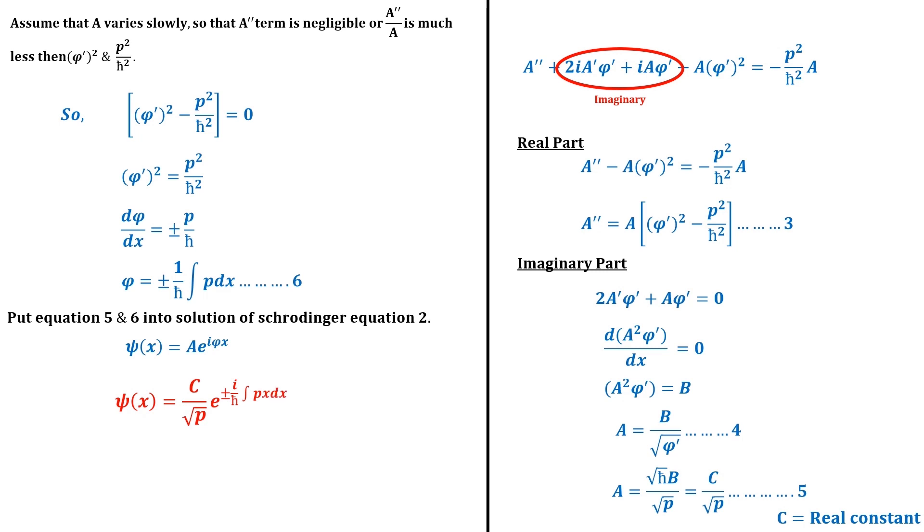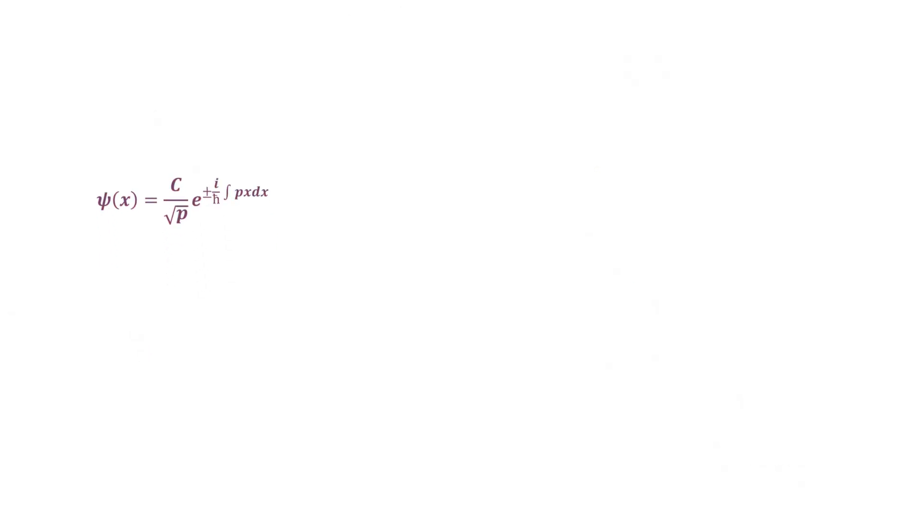As we know that ψ has no physical meaning, but its mode square tells the probability. Upon mode square of this function, |ψ|² equals C²/p. According to this, the probability of the particle being at some point is inversely proportional to its classical momentum. This is the result we are expecting.